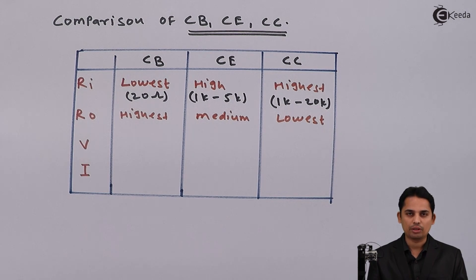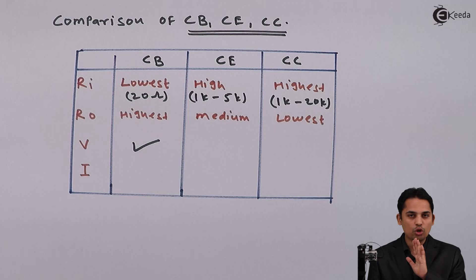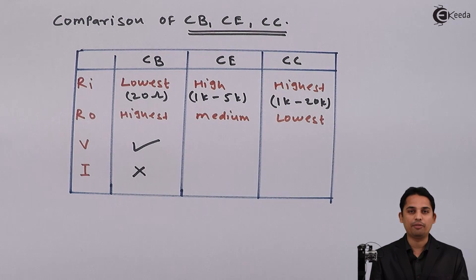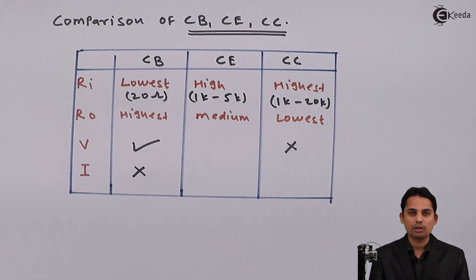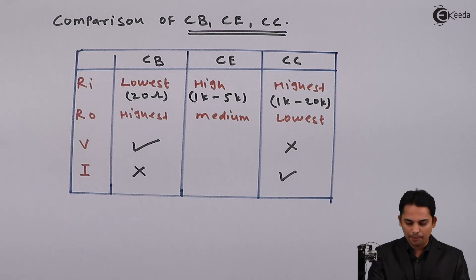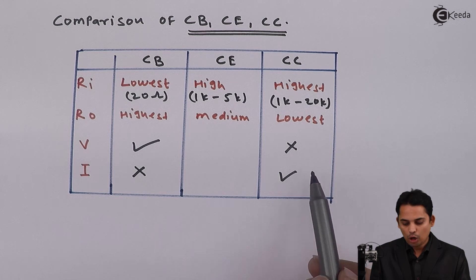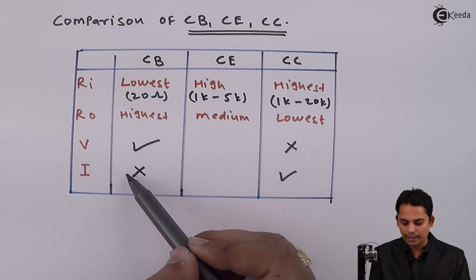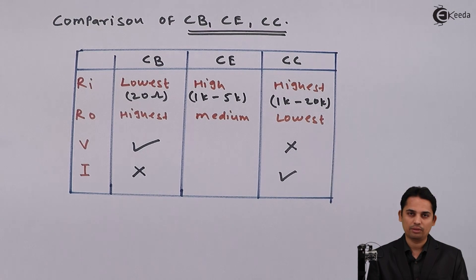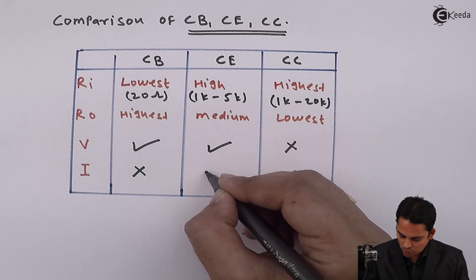For voltage amplification, the common base amplifier can give you voltage amplification, whereas it is not able to give you current amplification — so we put a cross in front of current amplification. Common collector amplifier does not give voltage amplification, but it does give current amplification. This is a drawback of both: common base amplifier cannot provide current amplification, and common collector amplifier cannot provide voltage amplification. Common emitter amplifier, however, provides both voltage and current amplification.